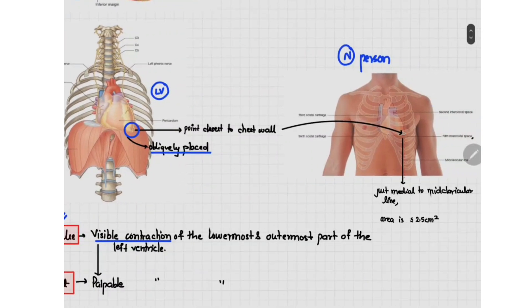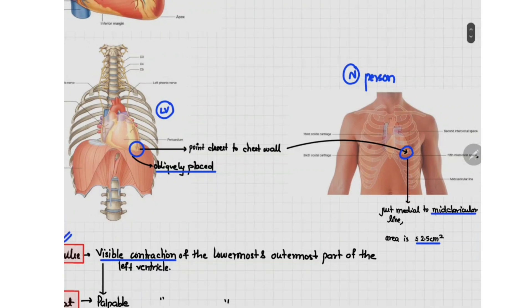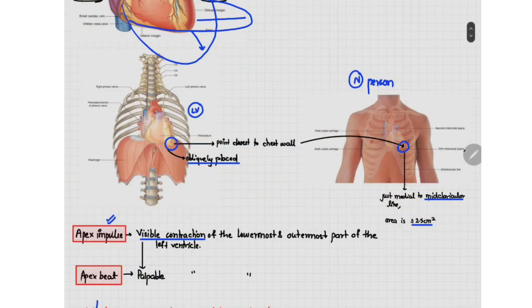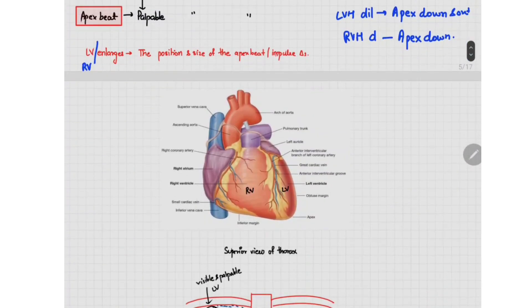In a normal person, this apex beat or apex impulse is seen or palpated just medial to the mid-clavicular line, and the area of this impulse is usually less than 2.5 centimeter square. If there are any changes in the left or right ventricular size, the apex gets shifted. In left ventricular dilation the apex goes down and out, whereas in right ventricular dilation the apex goes outward.